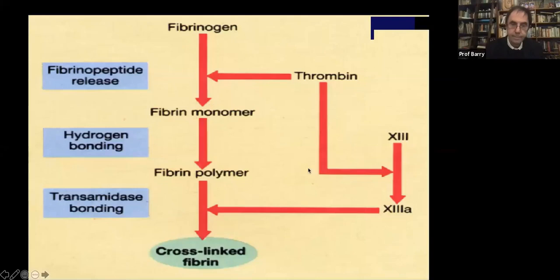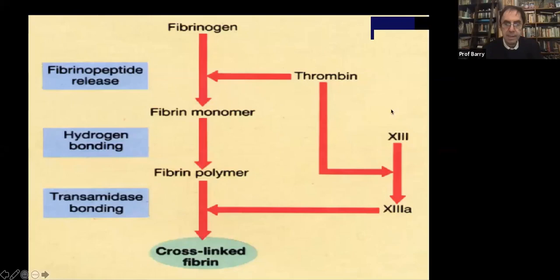When one adds thrombin to plasma, one gets the thrombin time forming — fibrin gets converted to a fibrin monomer and then a fibrin polymer, stabilized by factor 13 to form a stable clot.